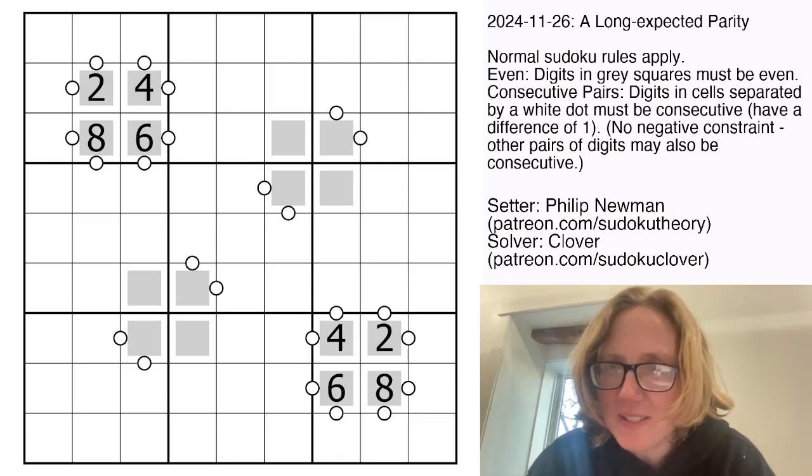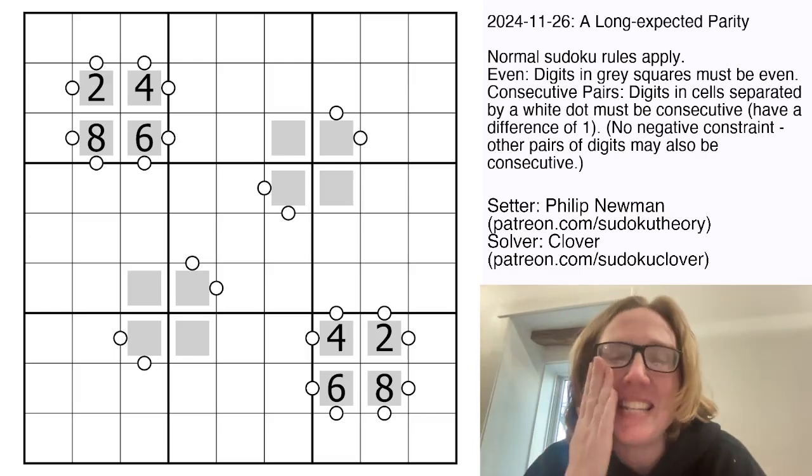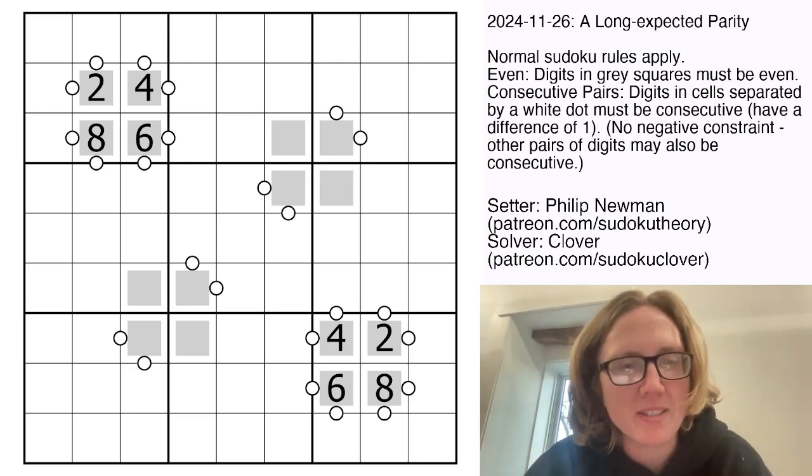All right, my friends, this is Clover, and today we are solving a long-expected parity by Philip Newman. This is an even consecutive pairs and just regular Sudoku, no odd cells here.